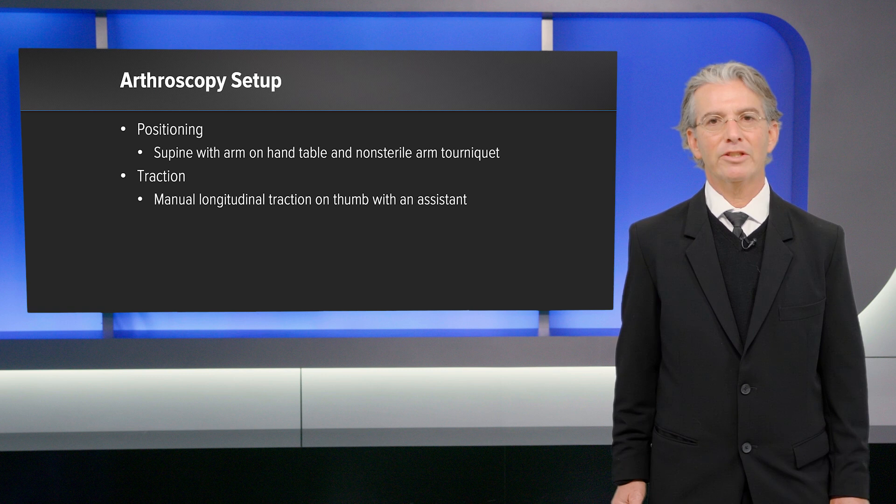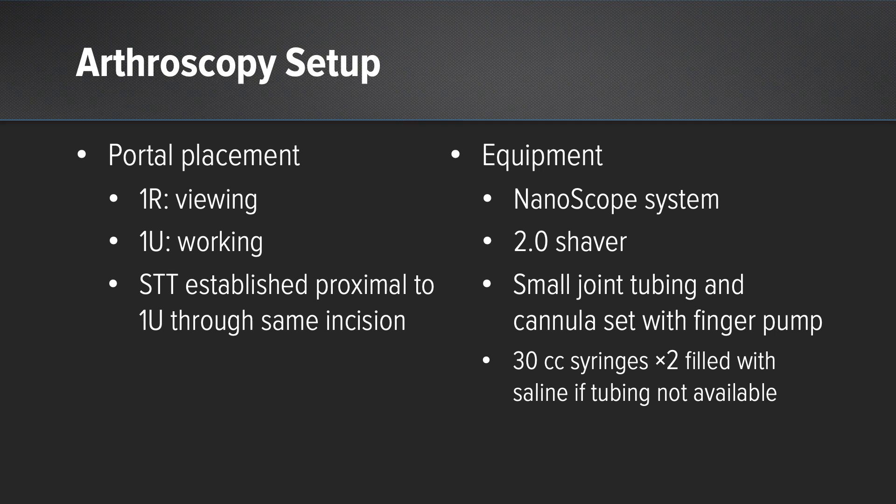Portal setup includes a 1R portal for viewing and a 1U portal for working. The STT joint can also be established through the 1U portal. Equipment includes the nanoscope, a 2.0 shaver, and tubing or manual injection for fluid into the nanoscope.